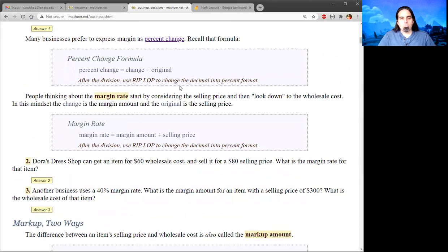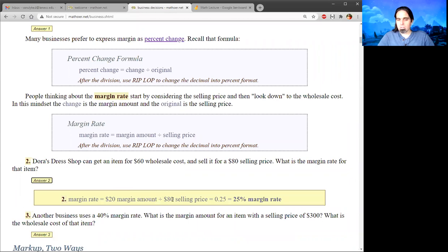Some people like to write this as a rate, a percentage. So we use the formula for percent change, change divided by original. The original for margin is the selling price. We're starting at what the customer is paying, the bigger number, and looking down to the smaller number, the wholesale cost. So the selling price is the original. The margin amount is the change. So in this case, that $20, if I divide it by the $80 selling price, it's a 25% margin rate.